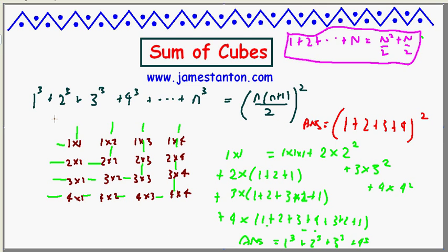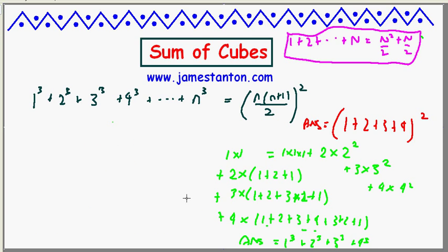Well, the two answers are coming from the same grid. They must be equal. So I guess we've proven the sum of the first four cubes is 1 plus 2 plus 3 plus 4 squared.